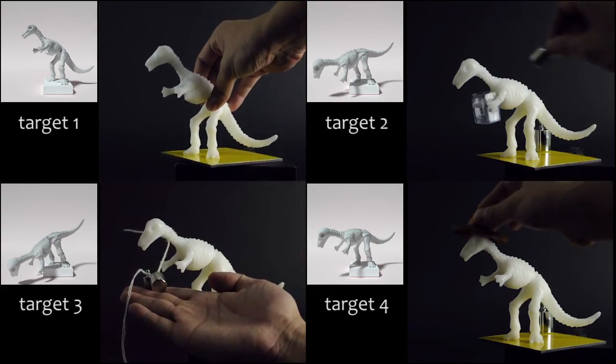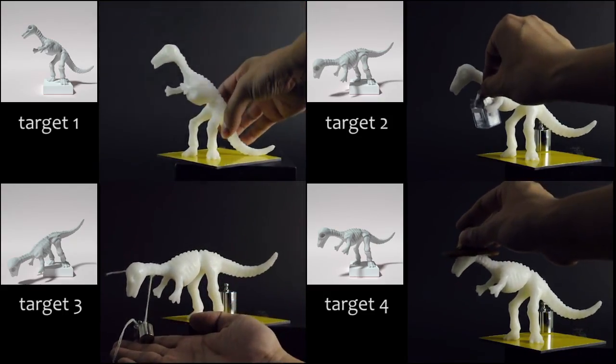The dinosaur model has four different target shapes under different force settings, and our fabricated object can achieve these targets very closely.